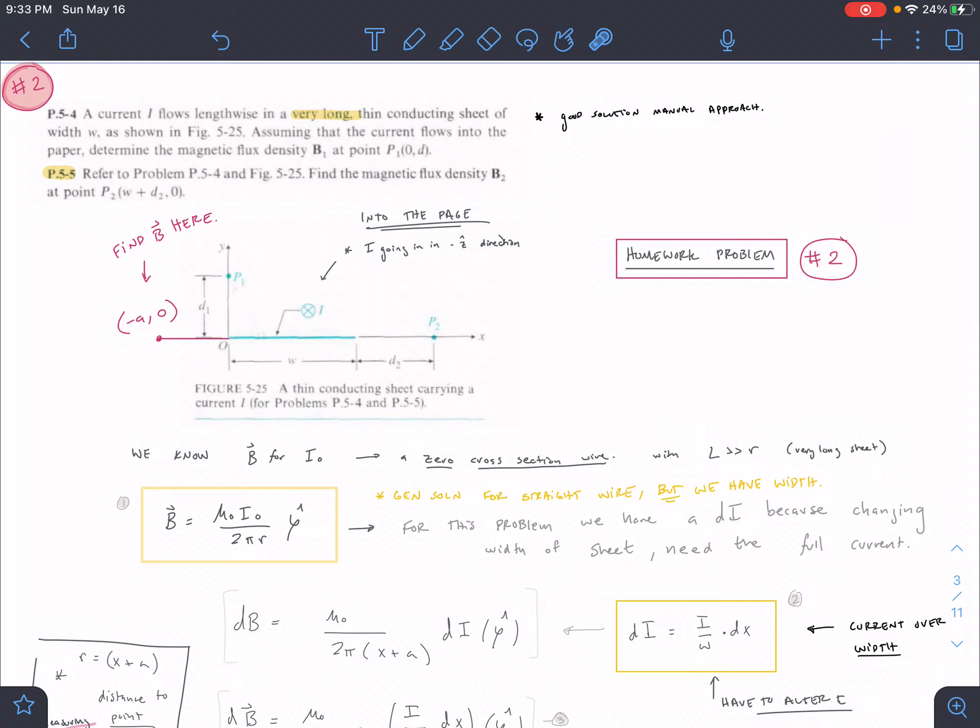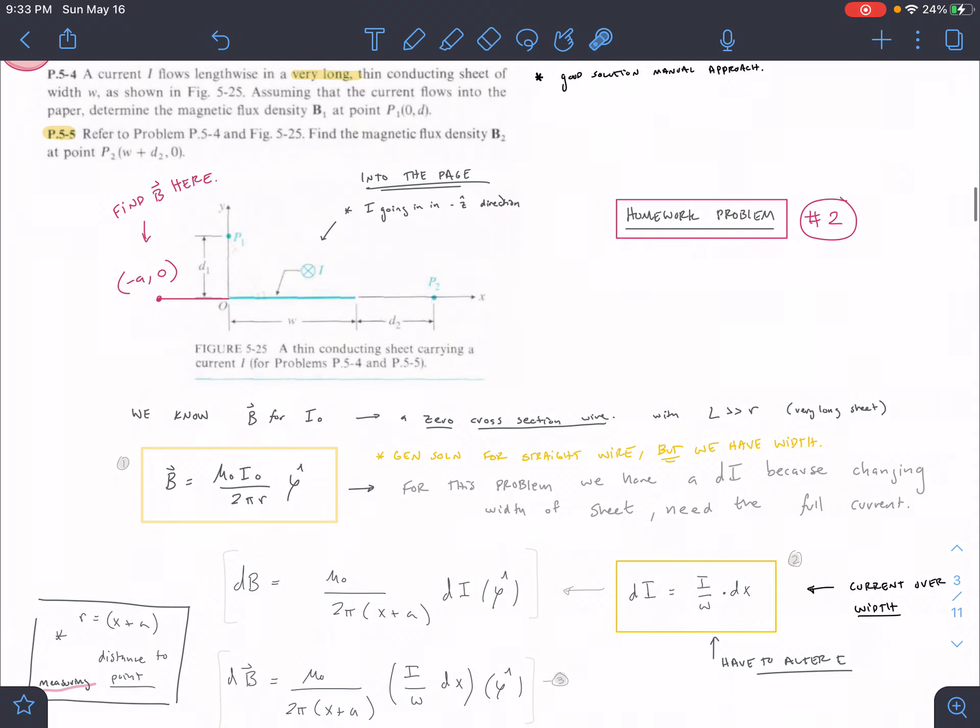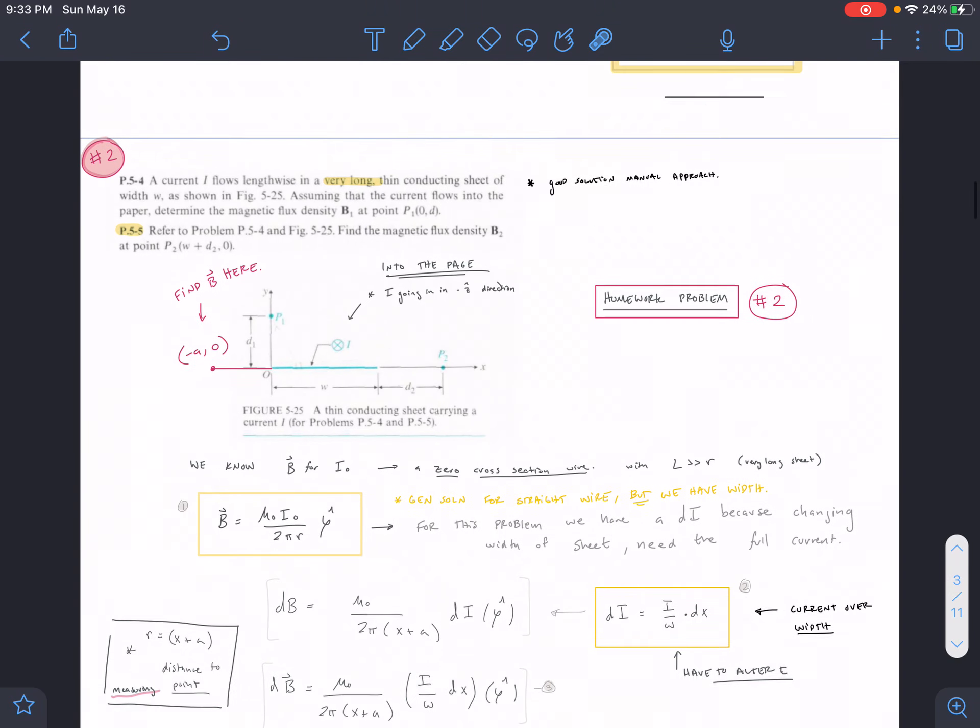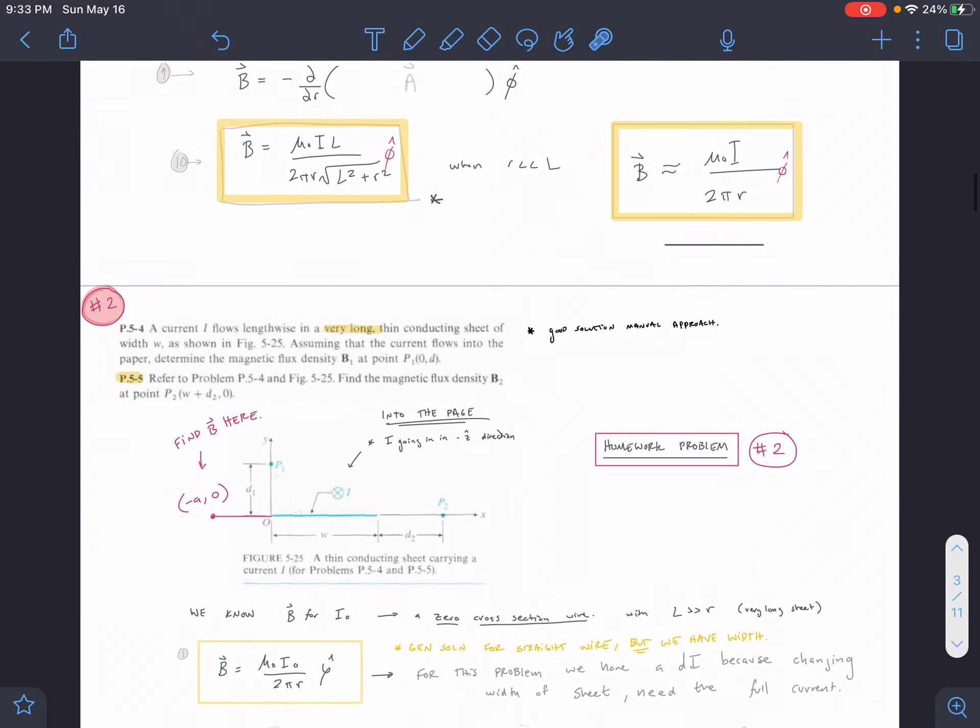It's flowing into the paper and we're trying to find B fields for this homework problem. We're trying to find the B field here. In this case we have a very long sheet, and when we have a very long sheet, as we said in the first part, when this L gets very large we can use this B field for a wire.